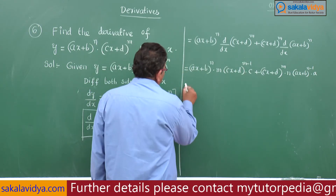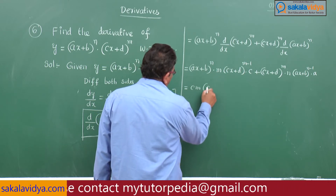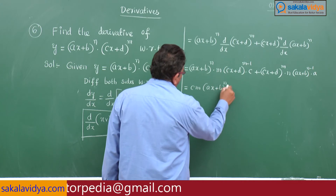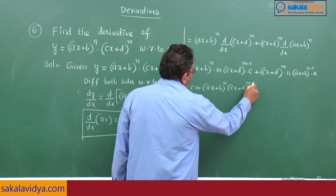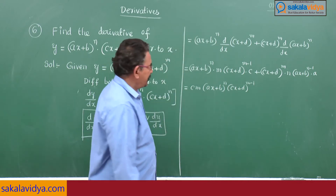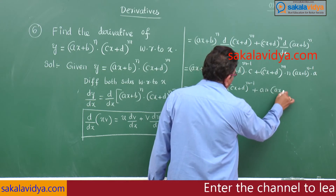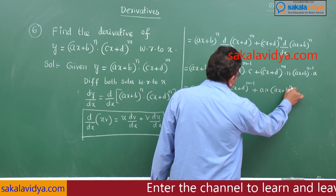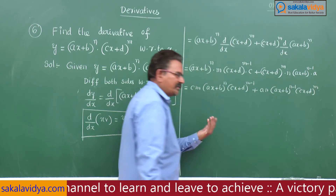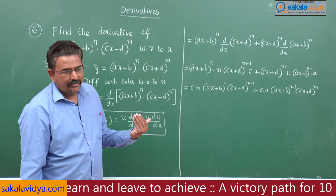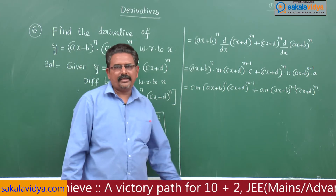Rearranging, we get: dy/dx = cm · (ax + b)^n · (cx + d)^(m-1) + an · (ax + b)^(n-1) · (cx + d)^m. You can further simplify by taking common factors out if interested, but you may also stop at this step.